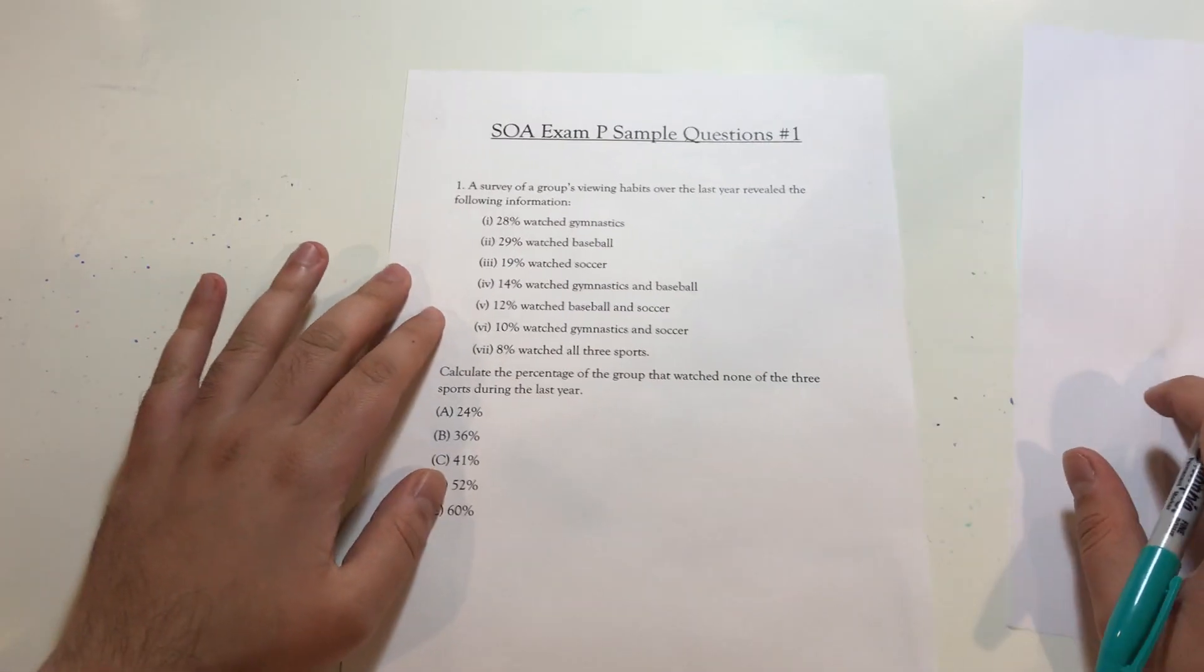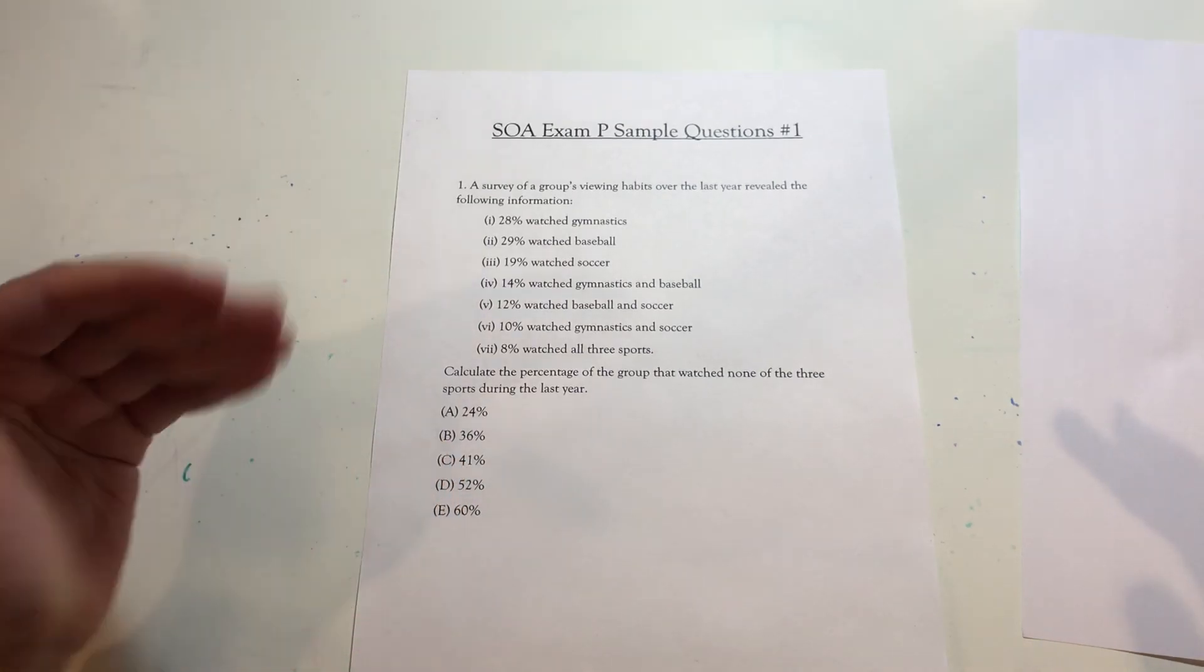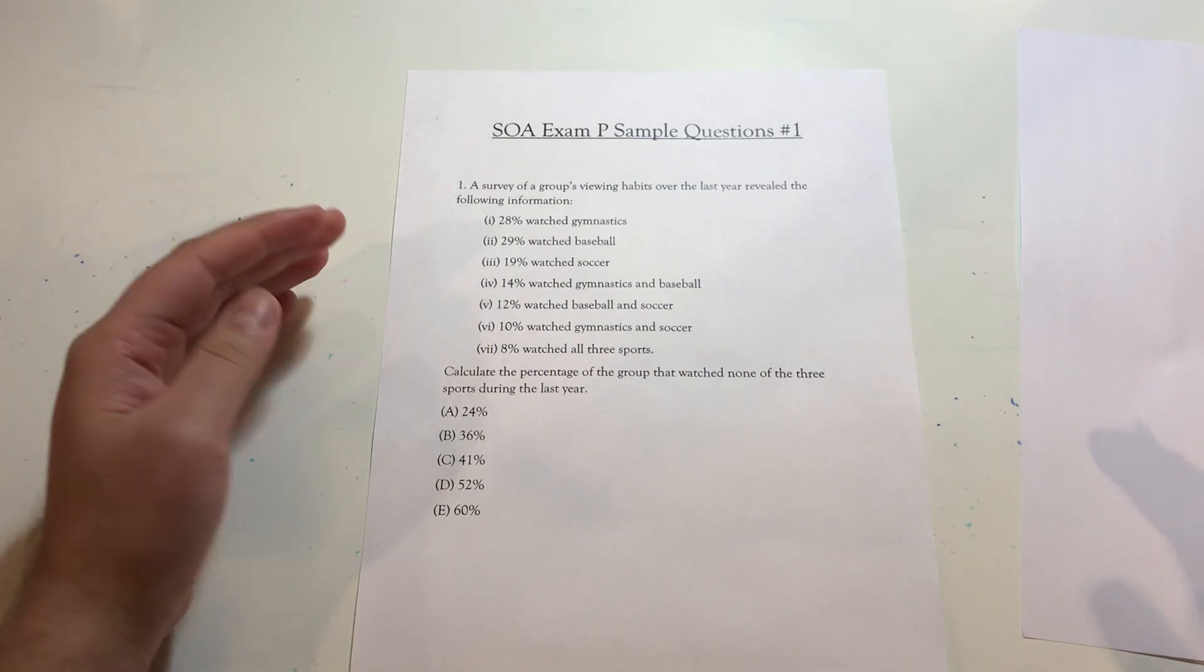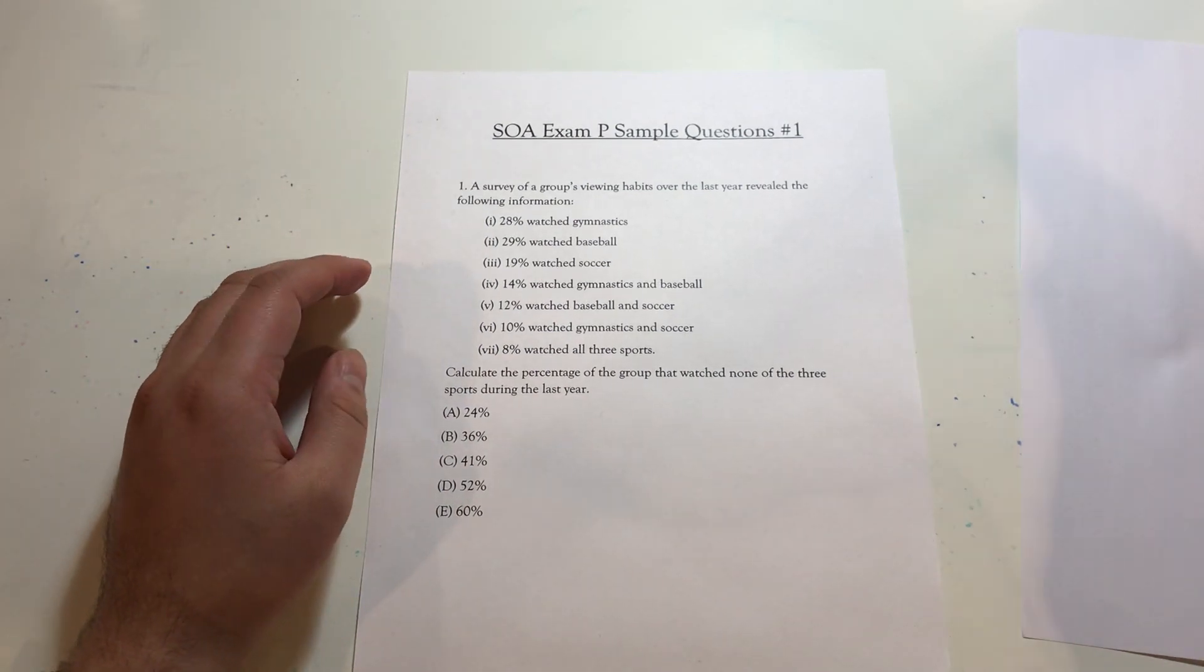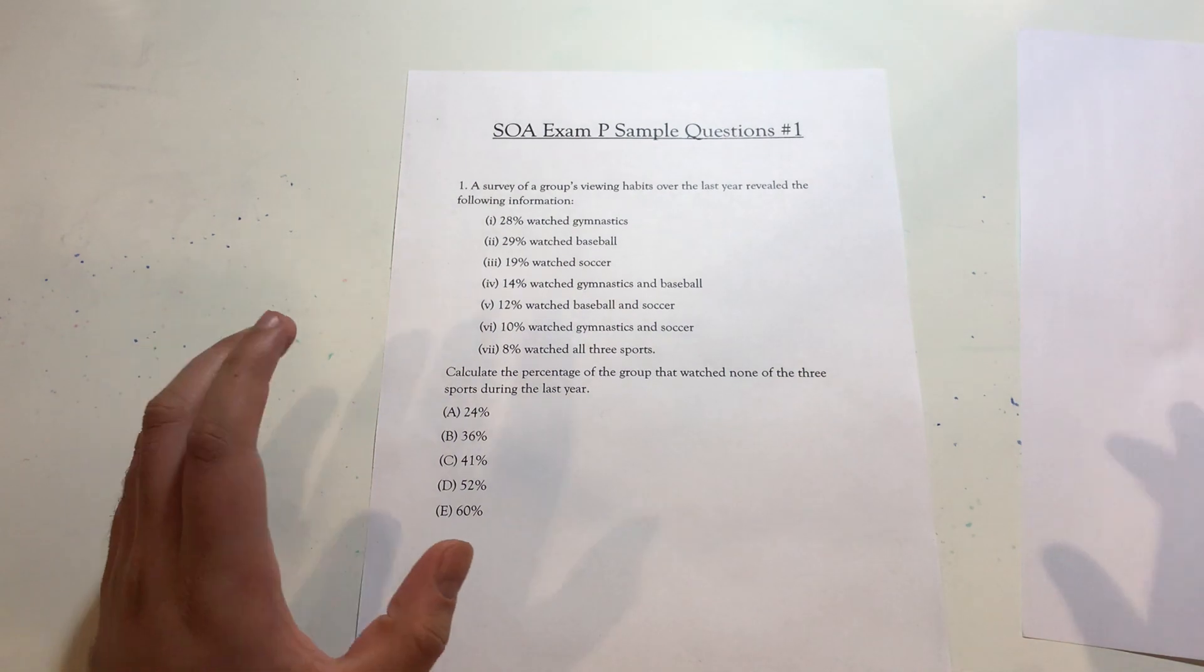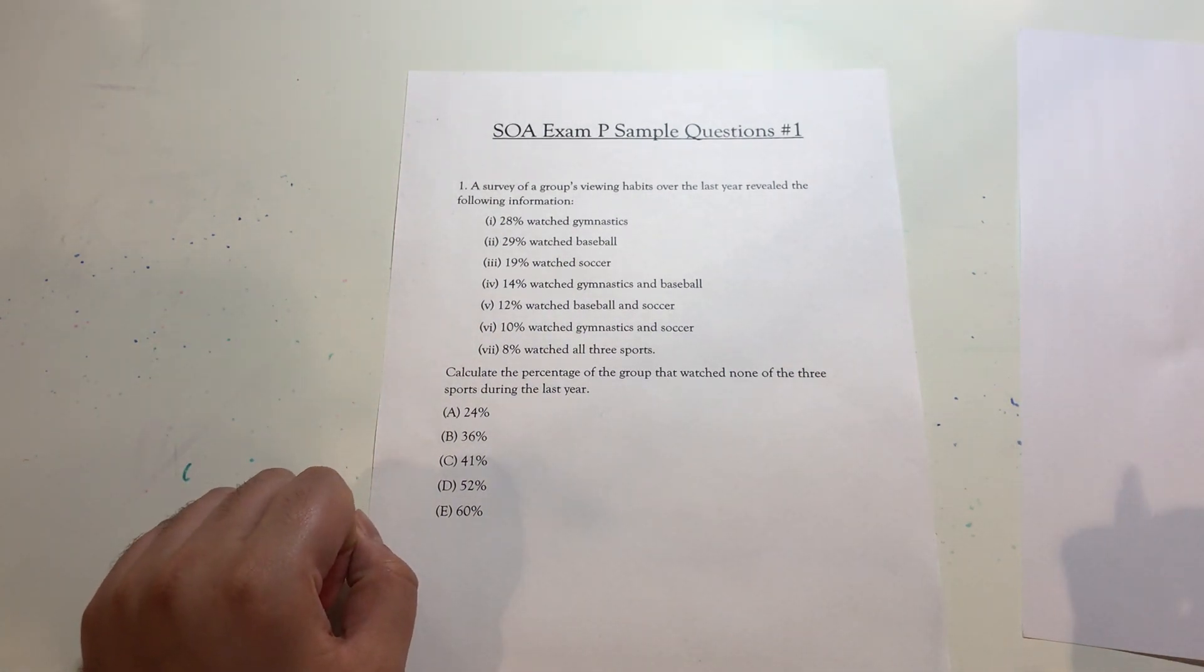So the first question states, a survey of a group's viewing habits over the last year revealed the following information. 28% watched gymnastics, 29% watched baseball, 19% watched soccer, 14% watched gymnastics and baseball, 12% watched baseball and soccer, 10% watched gymnastics and soccer, and 8% watched all three sports. Then we're asked to calculate the percentage of the group that watched none of these three sports during the last year.